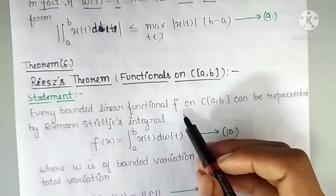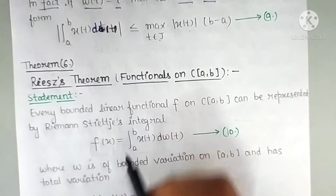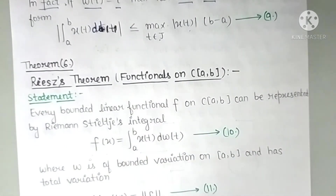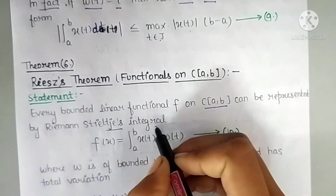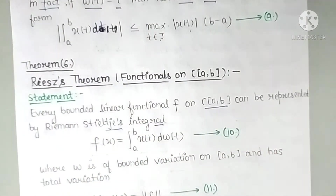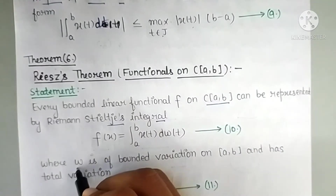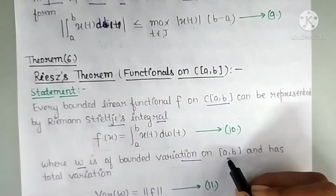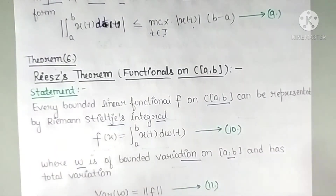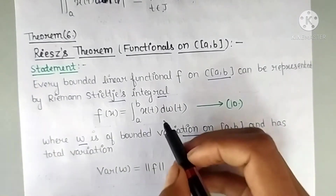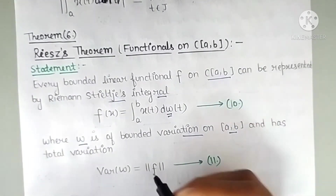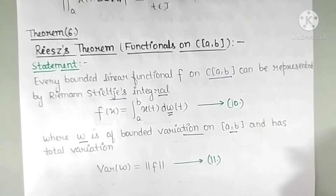Statement: Every bounded linear functional F on C[a,b] can be represented by a Riemann-Stieltjes integral as F(x) = ∫_a^b x(t) d(w(t)) — equation number 10 — where w is of bounded variation on [a,b], and the total variation of w equals the norm of F.